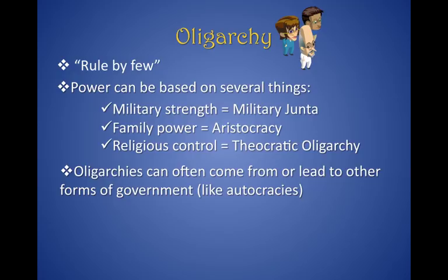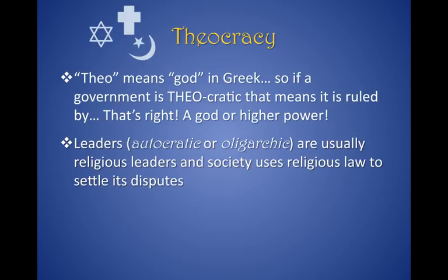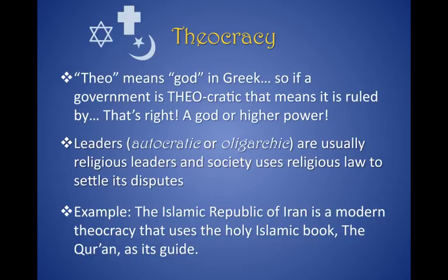The other example is called a theocracy. The word "theo" comes from the Greek meaning God. A theocracy is a government that gets its power from a higher authority — from God. Usually it's religious; leaders, whether autocratic or oligarchic, are usually religious leaders, and society uses religious law to settle its disputes. Some Islamic countries are theocracies, like Iran. There's also the Vatican, which is its own separate state within Italy, ruled by the Pope and the rules of the Catholic Church.